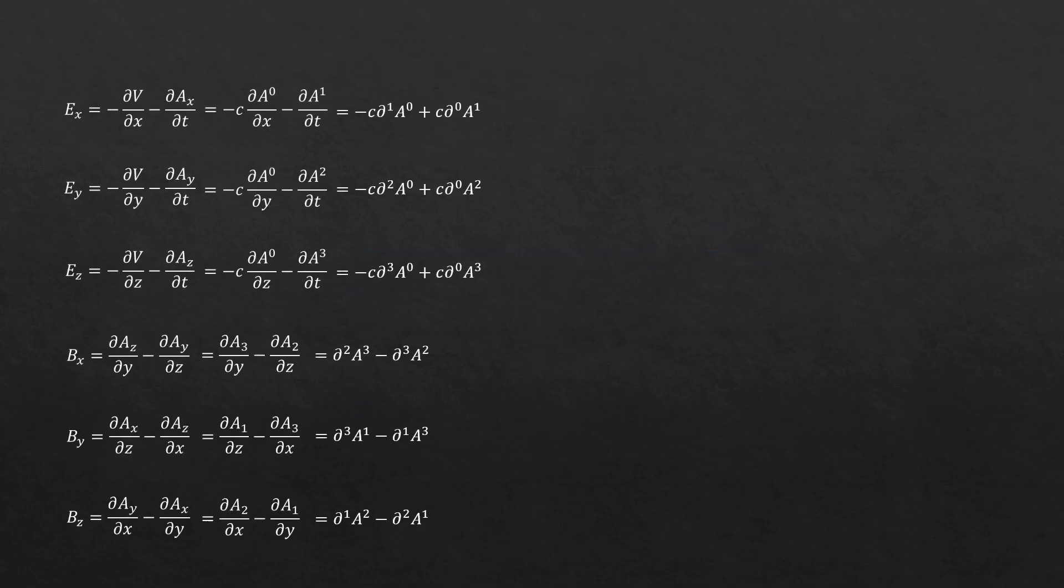Anyway, going back to here. I just rewrote the expressions in a nicer way. You see, I just moved the speed of light, c, to the other side. So, all the expressions look consistent. And you see how each expression uses two specific numbers interchangeably? Here, we only have 0 and 1s. Here, 0, 2, 2, 0. 0, 3, 3, 0. 2, 3, 3, 2. 1, 3, 3, 1. 1, 2, 2, 1. Each has a pair of numbers.